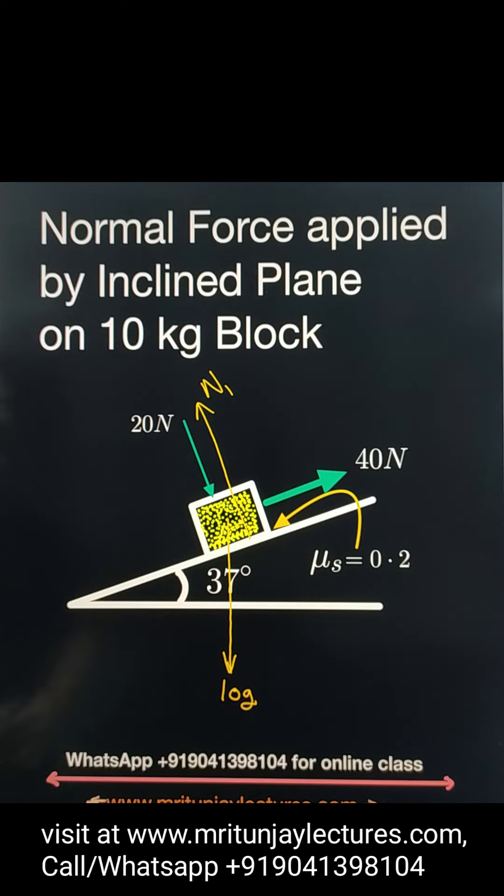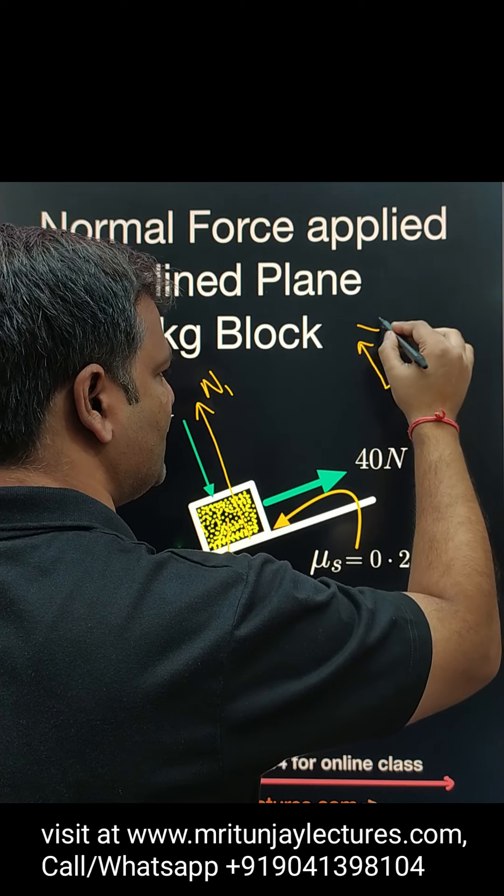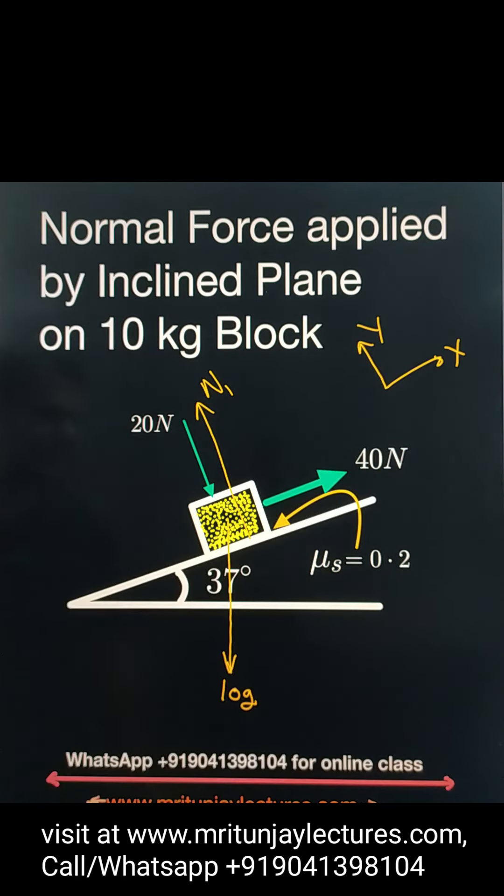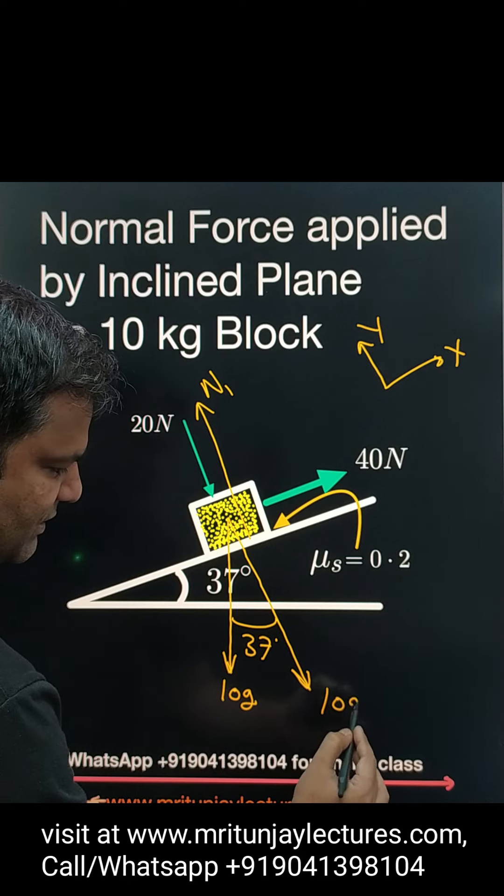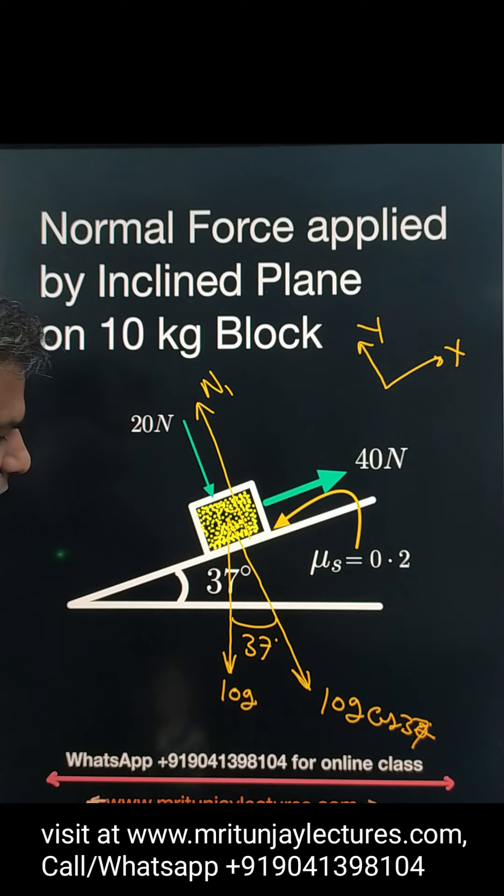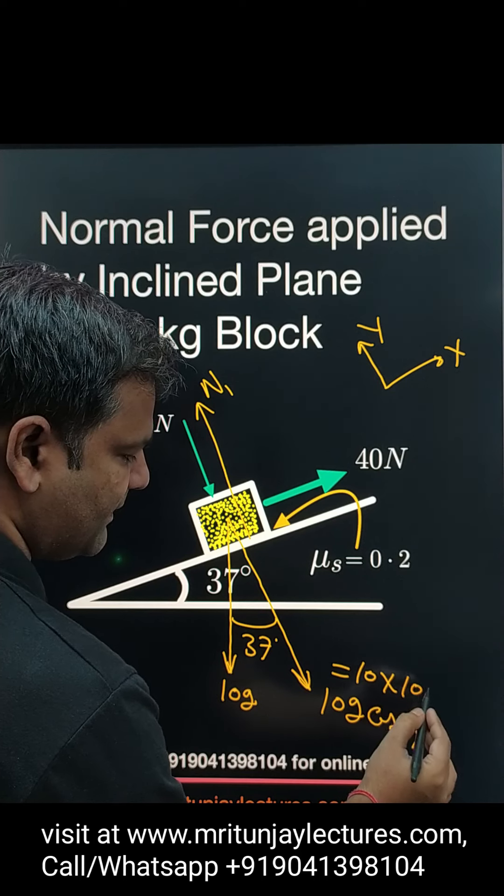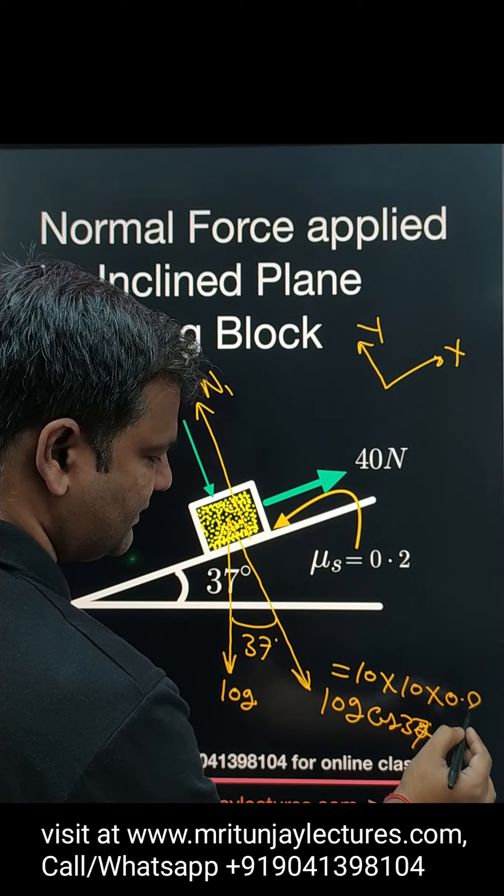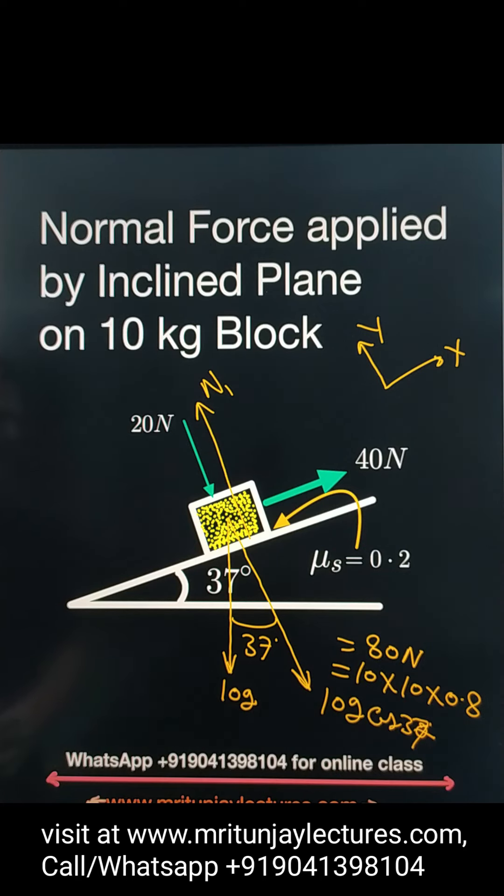Now, after that, look here. Our target: determine N1. So first of all, all component forces corresponding to capital X and capital Y axis. Component of 10G, that one 37, so here written 10G cos 37. Cos 37 is how much? 0.8. So if G equals 10 and that is 0.8, what about that value? That is 80 Newton.